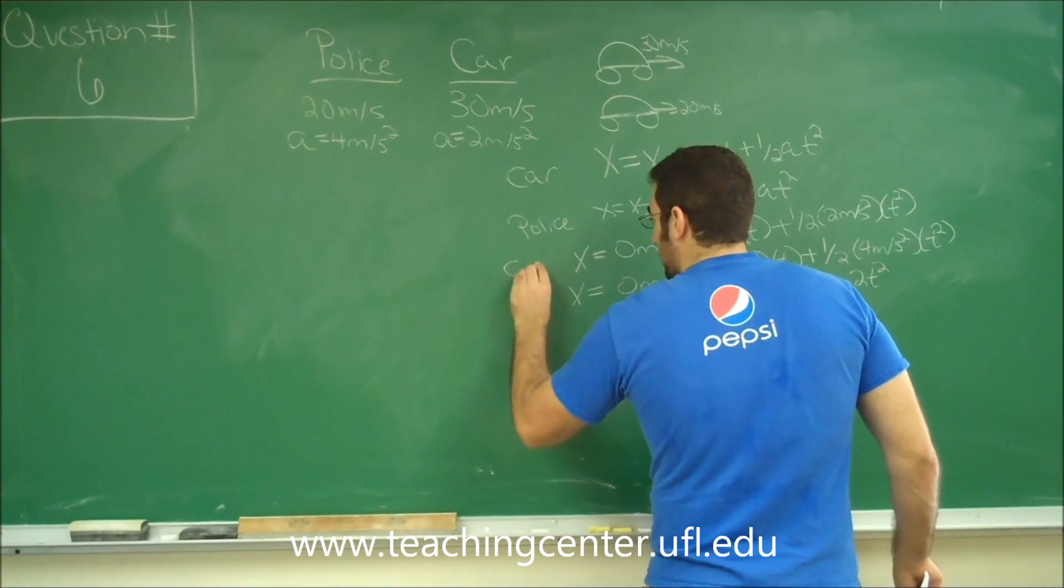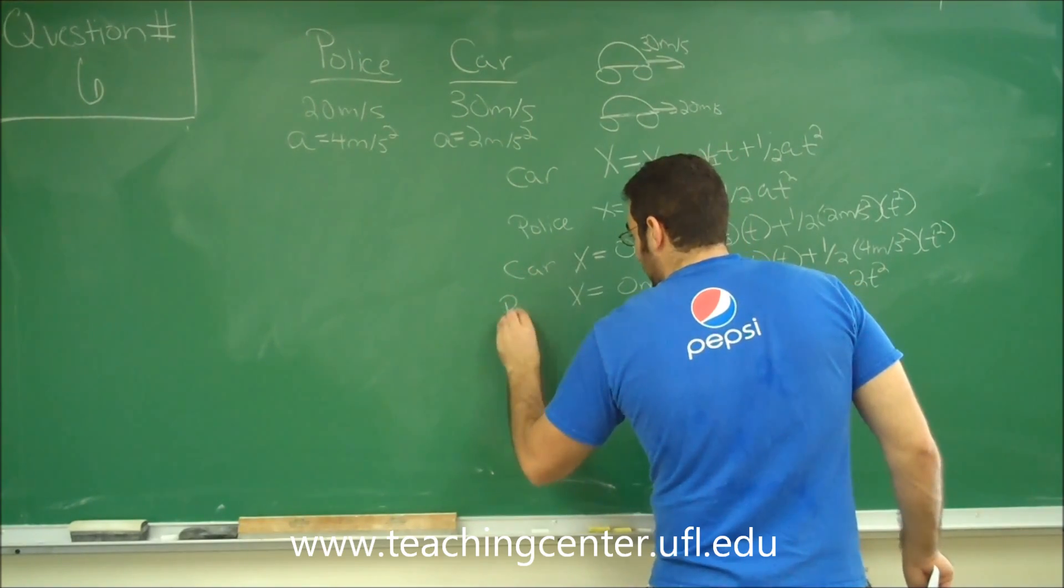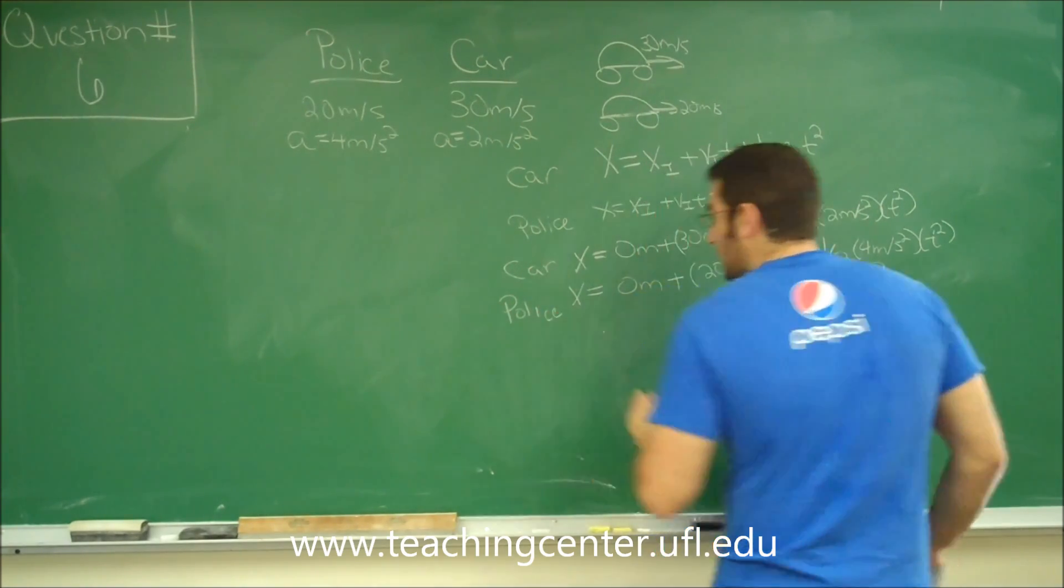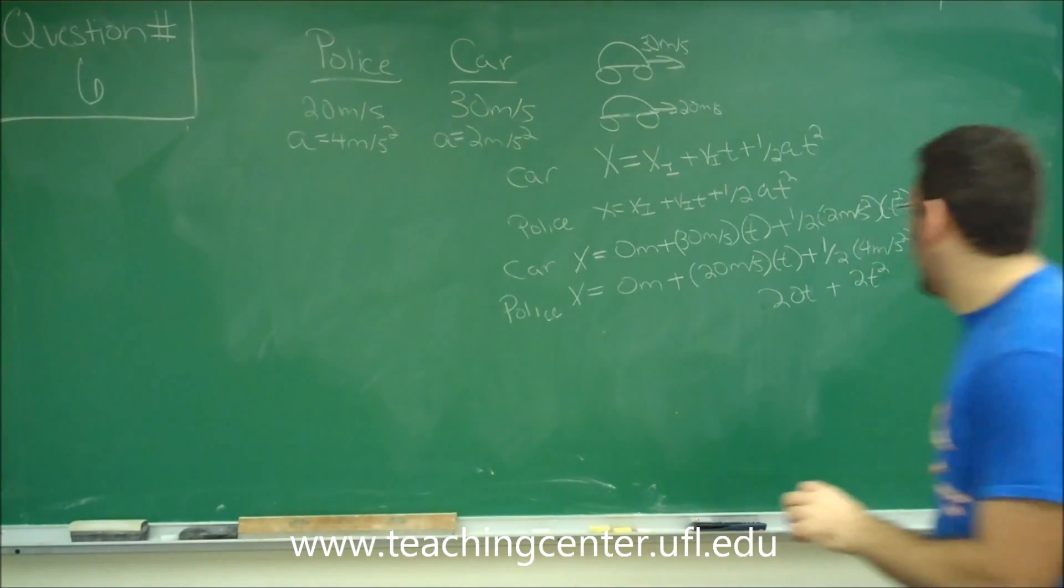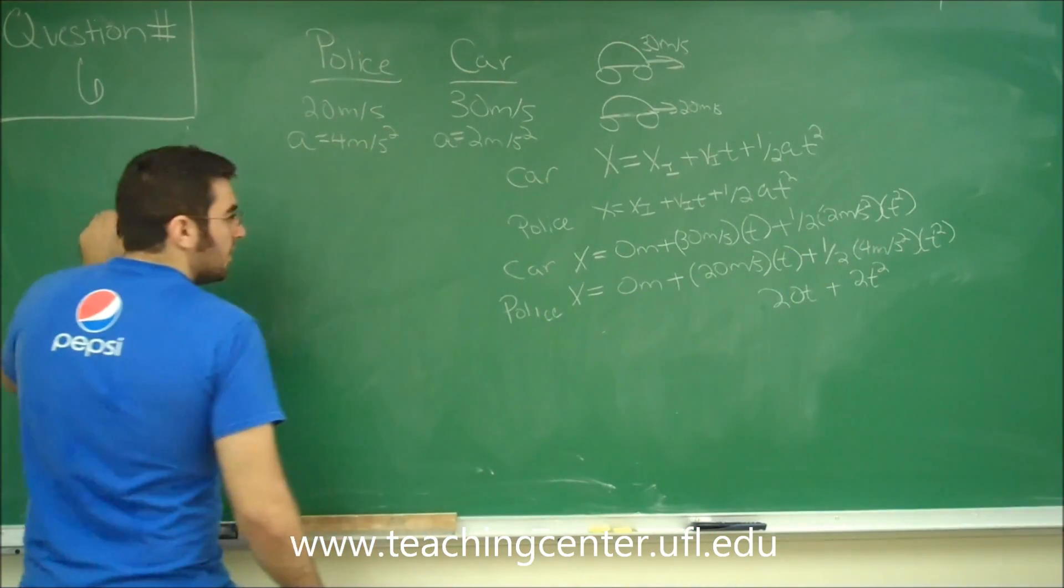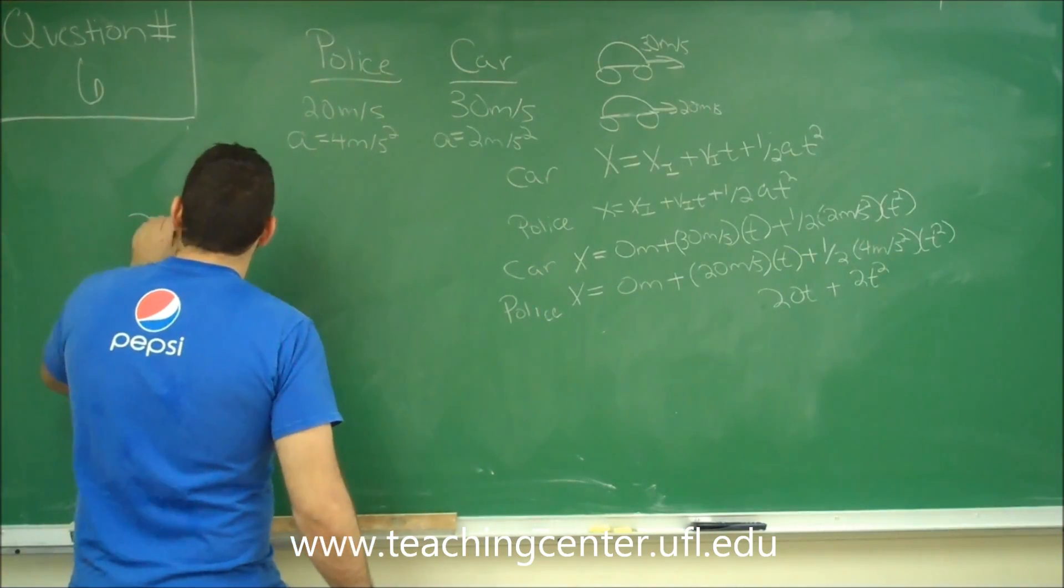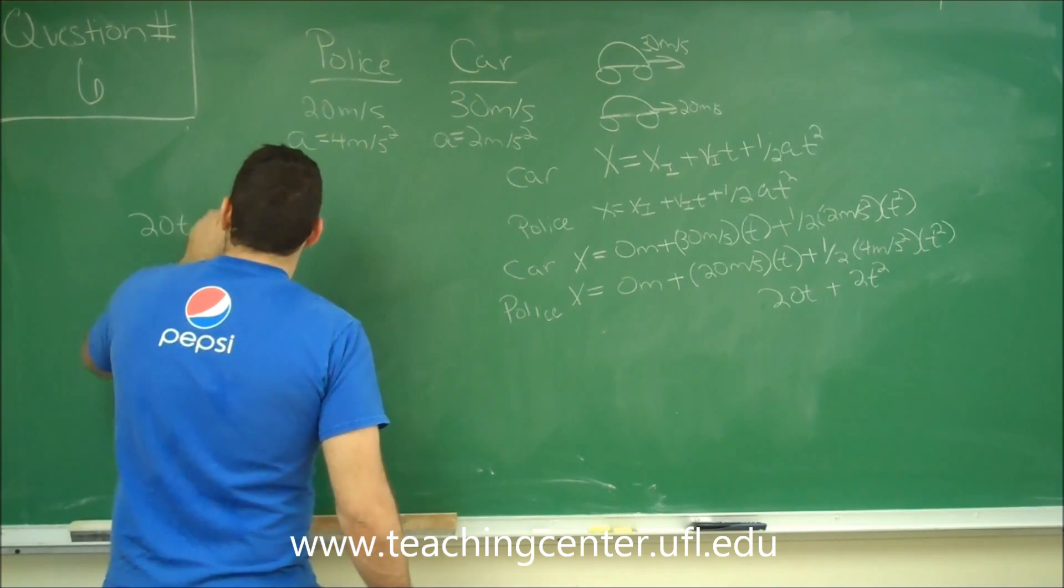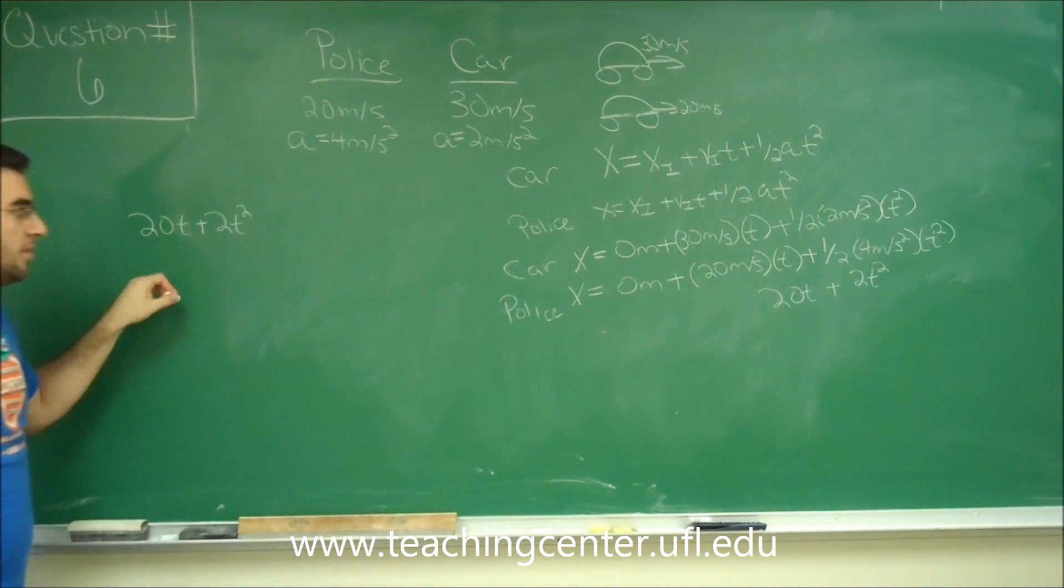So remember, this was for the car and this was for the police officer. So I'm going to go over here and write it. So we have 20t plus 2t squared for the police officer.